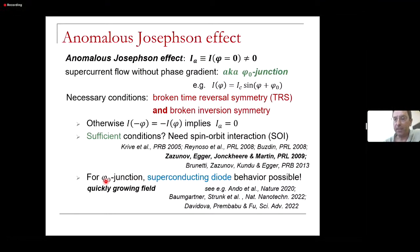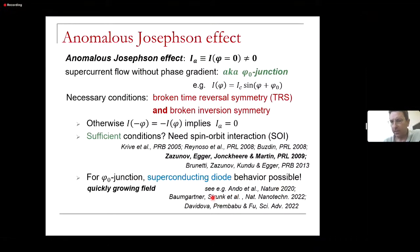You also need spin-orbit interactions, but that is still not sufficient. The question is what are the sufficient conditions. This topic, around 10 to 15 years old, has regained a lot of attention in the last two years after the discovery of superconducting diodes by Ando's group in Japan. A phi-naught junction shows anomalous Josephson behavior, which is a necessary ingredient for a superconducting diode — a device where supercurrent flows only from left to right but in the other direction only a dissipative normal current can flow. It is a dissipationless rectifier, and due to its fundamental and applied interest, this is now an exponentially growing field.